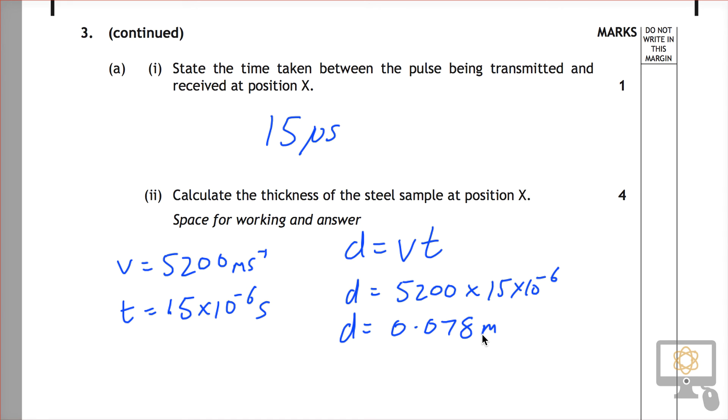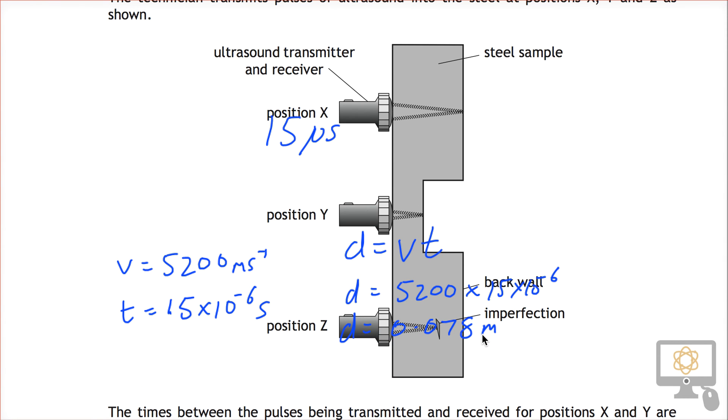You'd be tempted to leave it there, but that's not correct because that represents the distance that the signal has traveled going along and back again. But we're not interested in that distance, we're interested in the thickness of the steel. So that's actually half the distance that has traveled going there and back again.